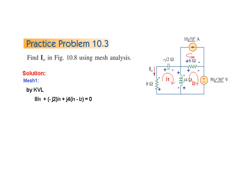By KVL, we can start from any place. I prefer to start from one corner, so we'll start from here. Plus 8i1 — so 8i1 — then we come here: there is minus j2, although there is a plus sign, but we write minus j2 — so minus j2 times i1.